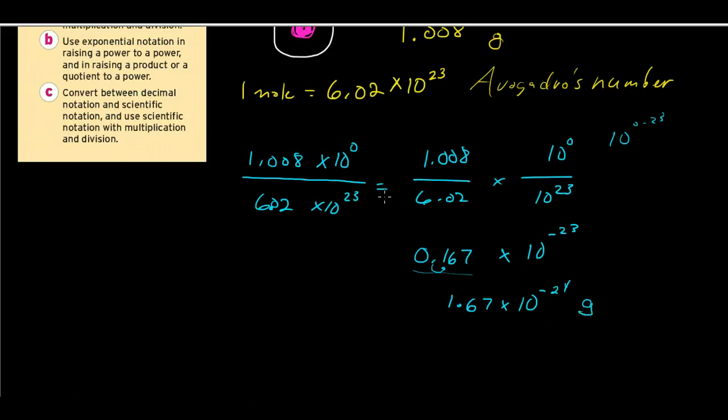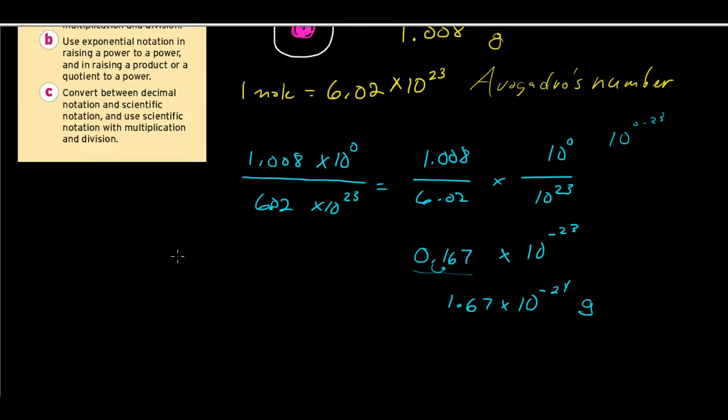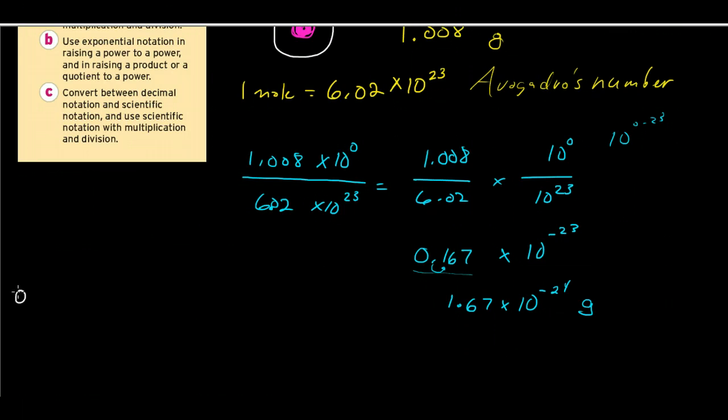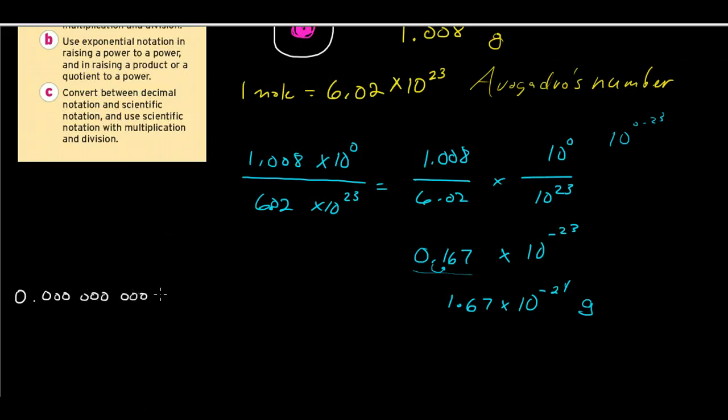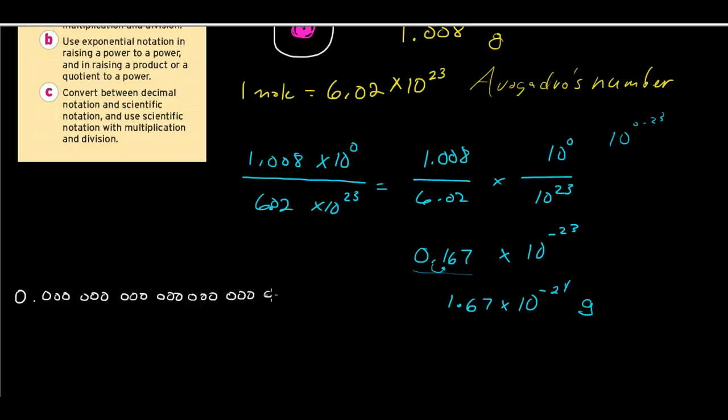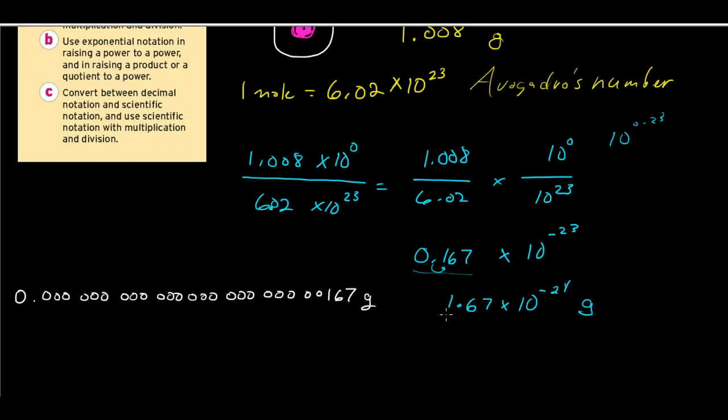This is the weight in grams of one single hydrogen atom. So that means I'll have a 1 with 23, if I move that over 1, then I'll have 23 zeros in front of it. So the weight in grams is 0.1, 2, 3, 4, 5, 6, 7, 8, 9, 10, 11, 12, 13, 14, 15, 16, 17, 18, 19, 20, 21, 22, 23, 1, 6, 7 grams is one hydrogen atom.